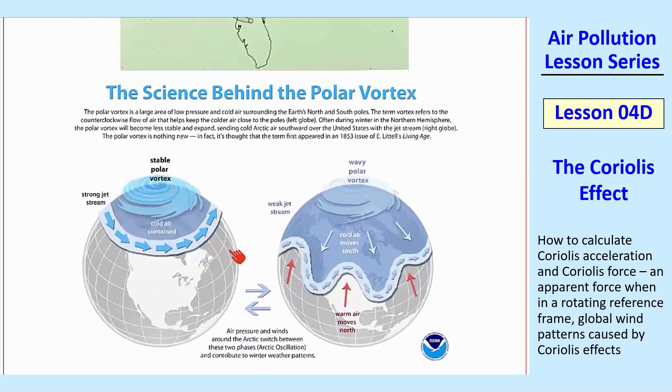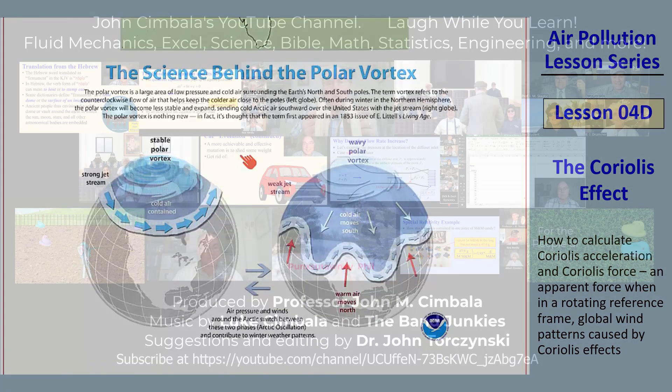a couple years ago, you may have remembered we had some very, very cold days in the winter, and they blamed it on something called a polar vortex. What that was, we have all these Hadley cells and everything, but sometimes they can get unstable and have this kind of wavy shape. And that was what was causing the cold air to blow down and into our neck of the woods and make us very cold for a while. So that's a little bit about the Coriolis force.